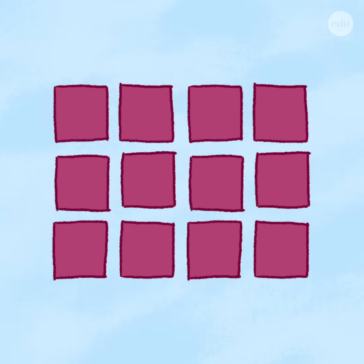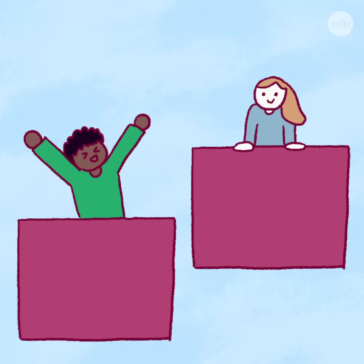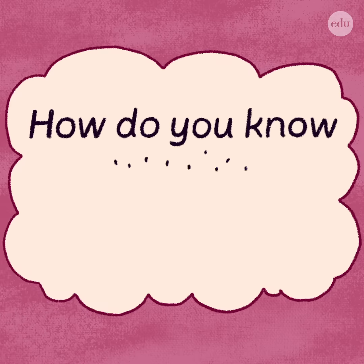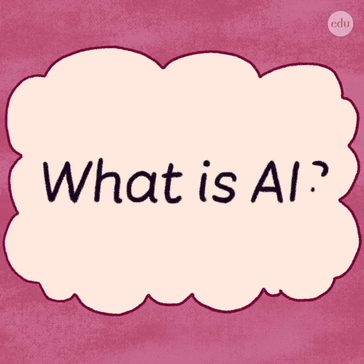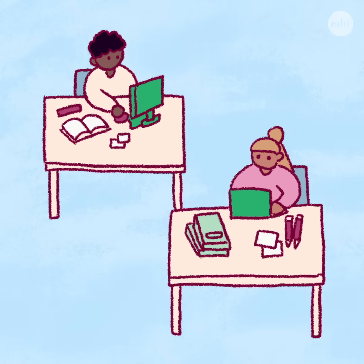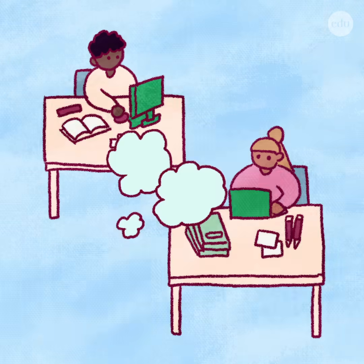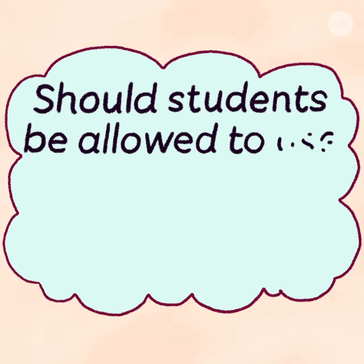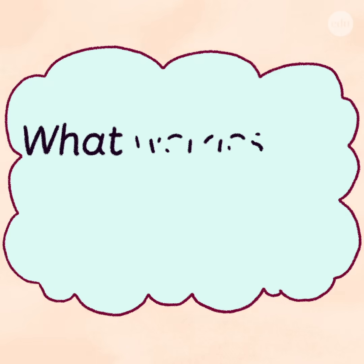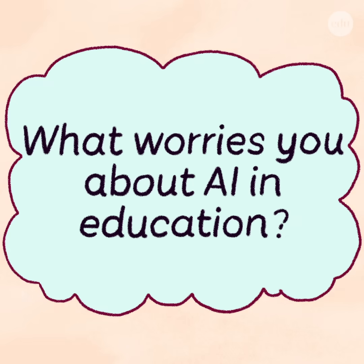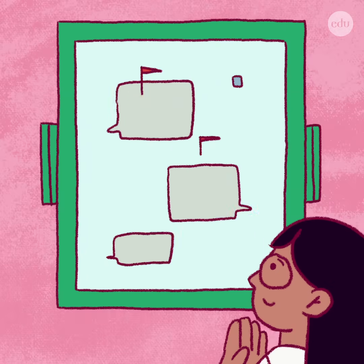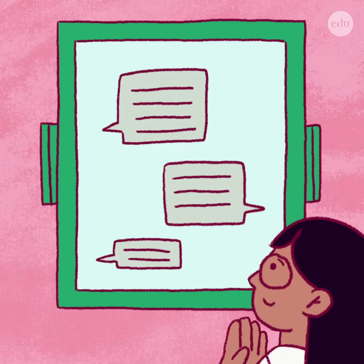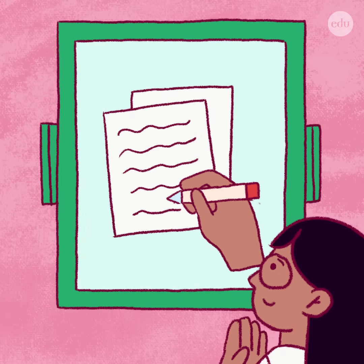Start with a whole class or small group discussion. For younger or less tech-savvy students, you can ask: how do you know whether something AI writes is accurate? Or even, what is AI? For teens, you might address ethical questions: should students be allowed to use ChatGPT to help them write an essay? Or, what worries you about AI in education? Learning where your students are at now will help guide future conversations and allow you to tailor your assignments going forward.